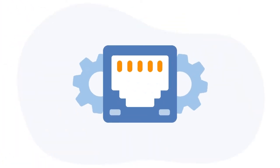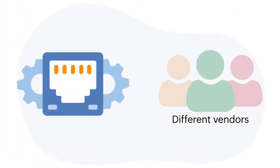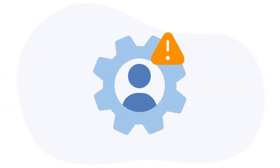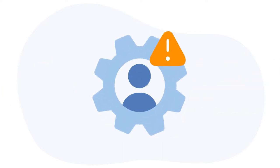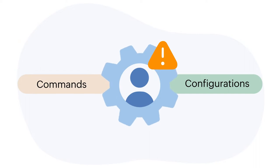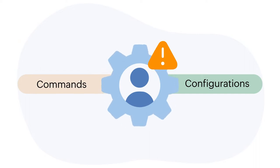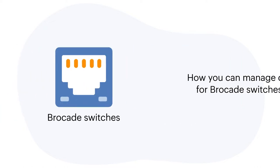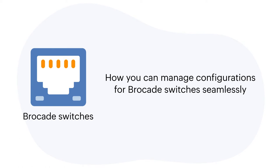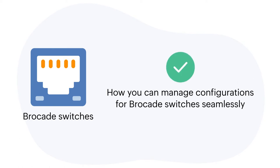Manually managing switches of different vendors in a large network infrastructure is arduous for network admins because each vendor has a different set of commands and configurations. Suppose your network environment mainly consists of Brocade switches. This video will give you clear insights on how you can manage configurations for Brocade switches seamlessly.